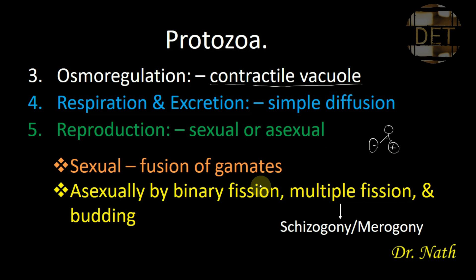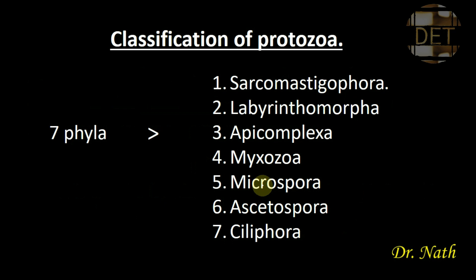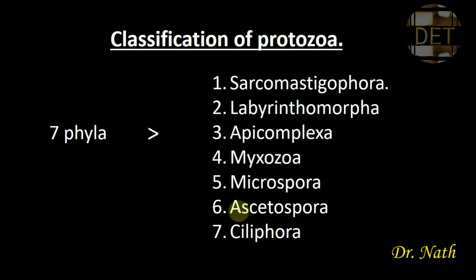Having known the features of Protozoa, let's look at the classification. The sub-kingdom Protozoa is classified into seven phyla: Sarcomastigophora, Labyrinthomorpha, Apicomplexa, Myxozoa, Microspora, Ascetospora, and Ciliophora. In the next video, we will analyze each of these phyla and look at their distinct characteristics.